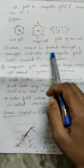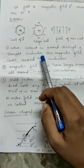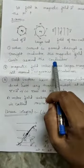When current is passed through a straight conductor, the magnetic field curls around the conductor.